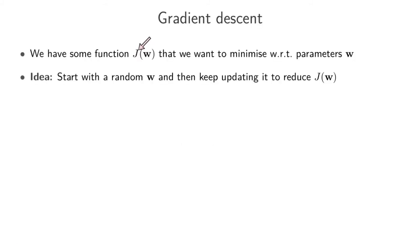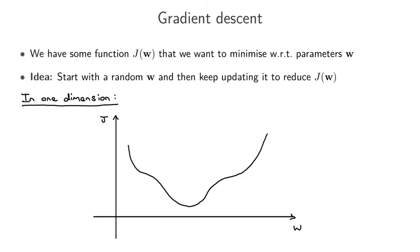Here we have some function J which is a function of some variables w, which in general can be a vector of variables, and we want to minimize this function J with respect to these variables w. I'm already using the notation from machine learning, so J could be your loss function that you want to minimize with respect to your parameter vector w. The idea in gradient descent is to start with a random w — some random guess of your parameters — and then keep updating w in order to reduce the value of the function. Let's look at an example in one dimension.